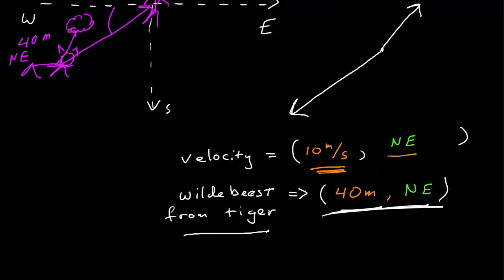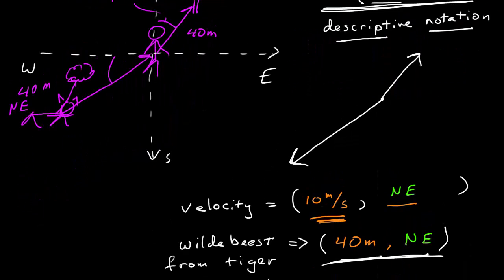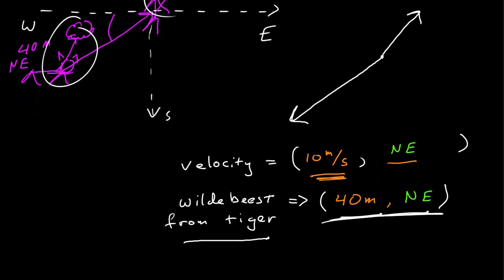Now, this vector is, in fact, exactly the same as this vector, the tree in relation to you. If a vector has the same magnitude and points in the same direction, they are the same vector, even if they are in different points in space.